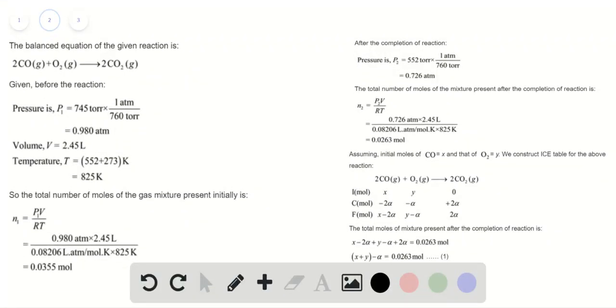The balanced equation for the given reaction is represented here. We are provided with the pressure, volume, and temperature. Using the ideal gas equation, which is PV equals nRT, where P is the pressure, V is the volume, n is the number of moles of gas, R is the gas constant, and T is the temperature.